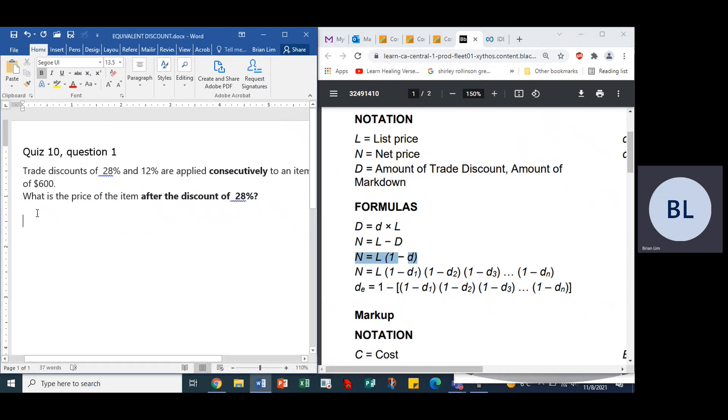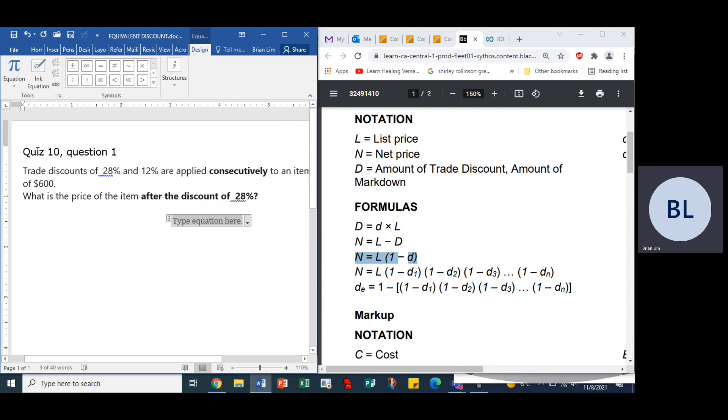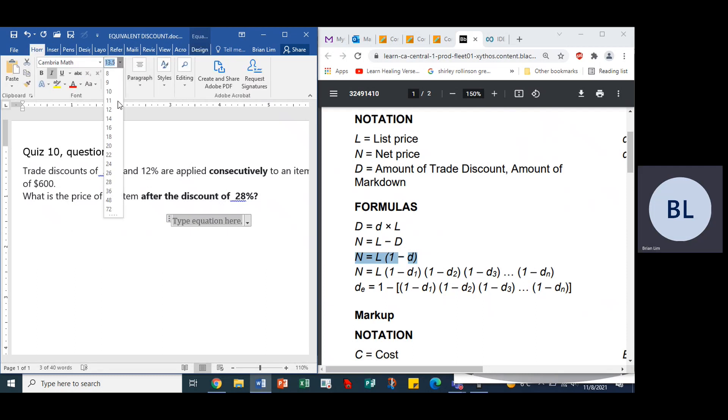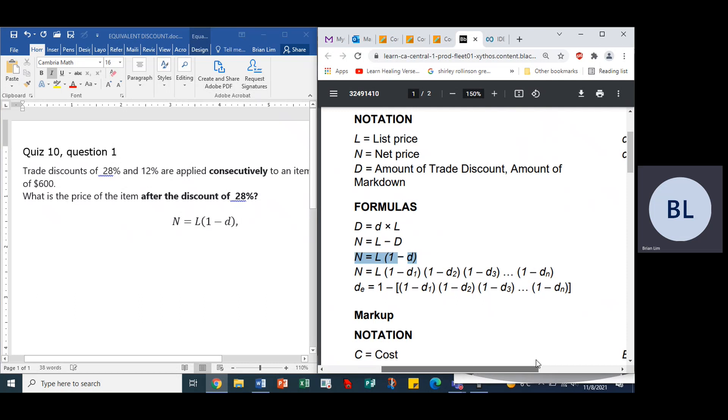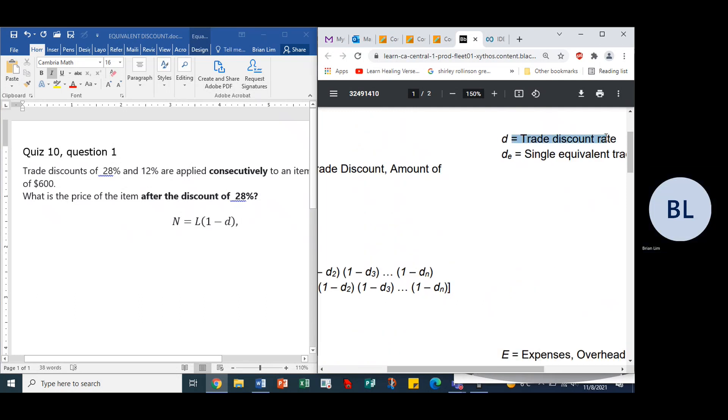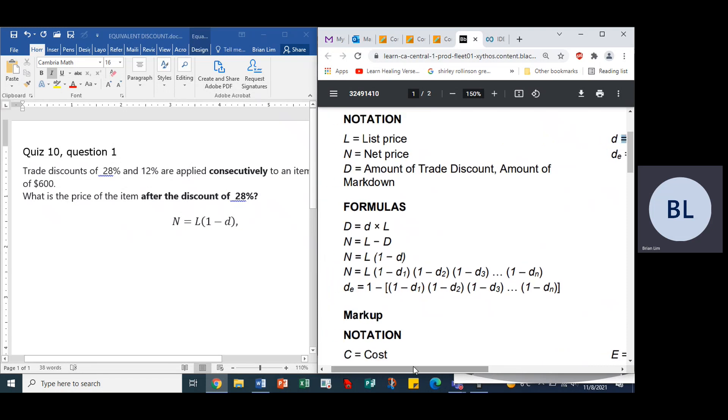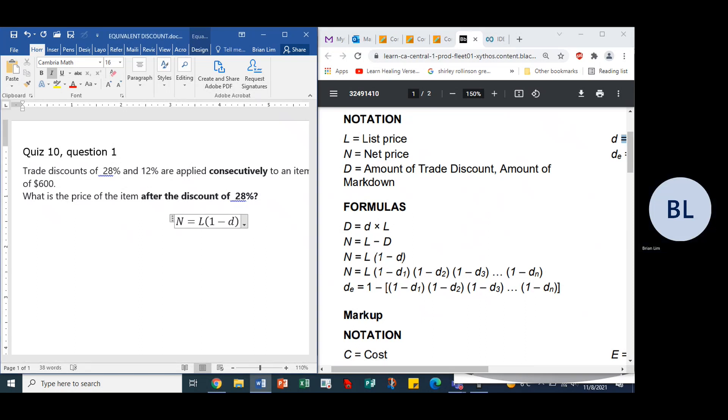We have N is equal to L, the list price, times one minus d, which is the discount. N is the net price, L is the list, and d is the discount. D is the trade discount rate, expressed as a percent like 28% or as an equivalent decimal of 0.28.